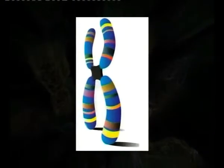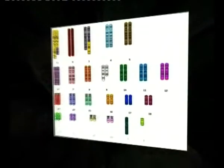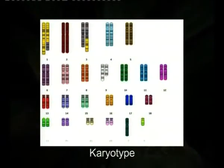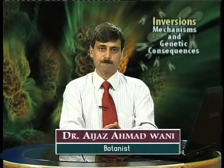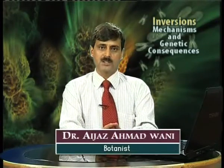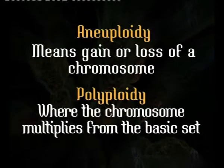The whole chromosome complement of an organism, which is known as the karyotype, is generally fixed for a species or for the organisms of that species. Sometimes in this karyotype, or the chromosomal complement, variations occur. There are two types of variations which occur in these chromosomes: one is the numerical variation, which includes aneuploidy — meaning gain or loss of a chromosome.